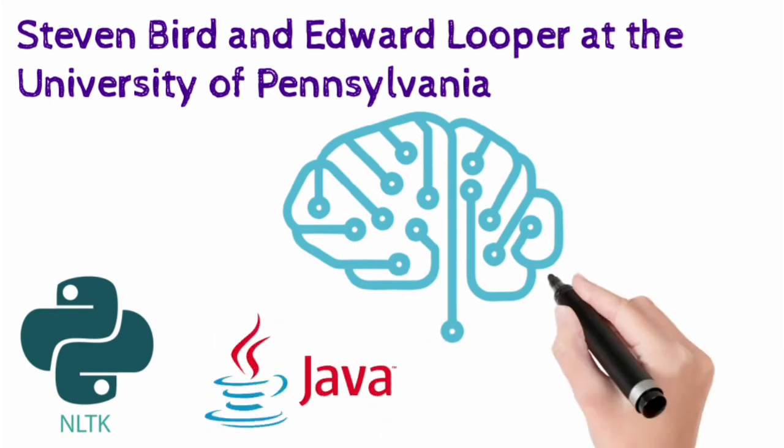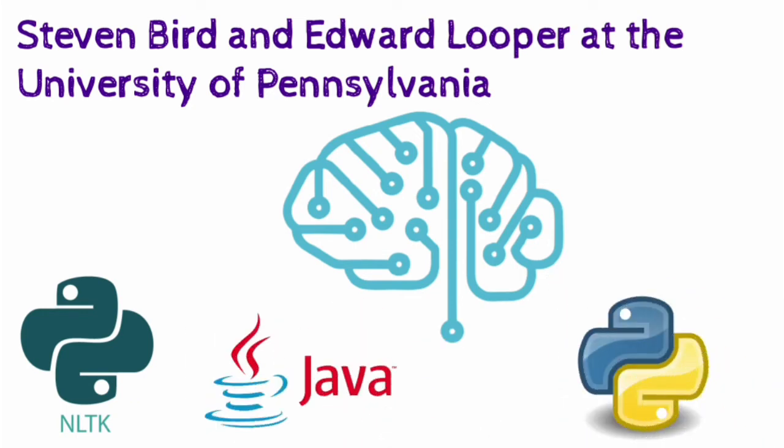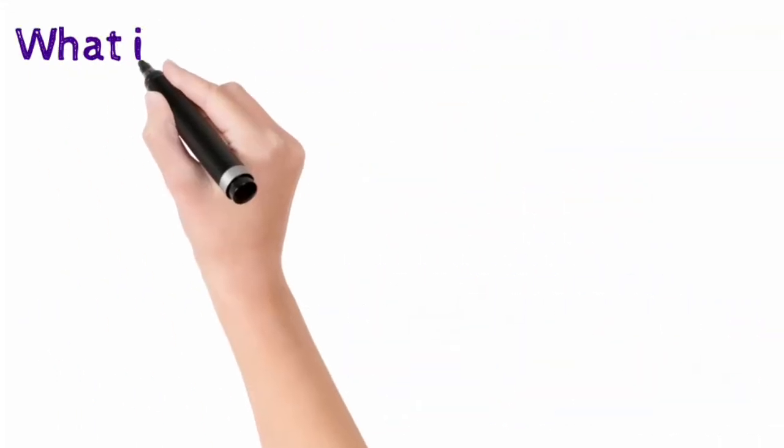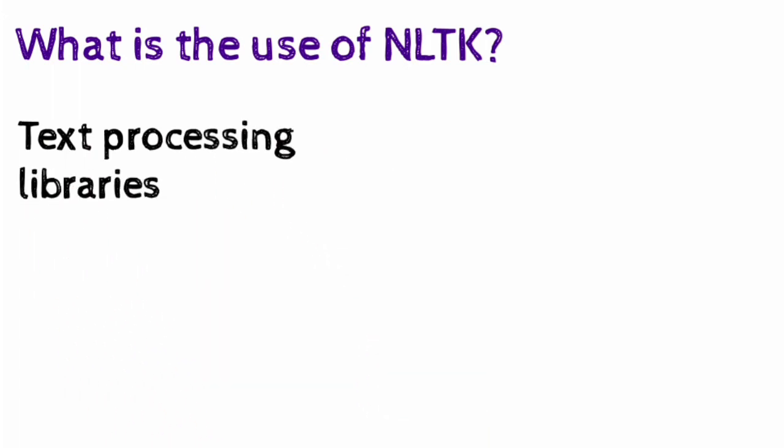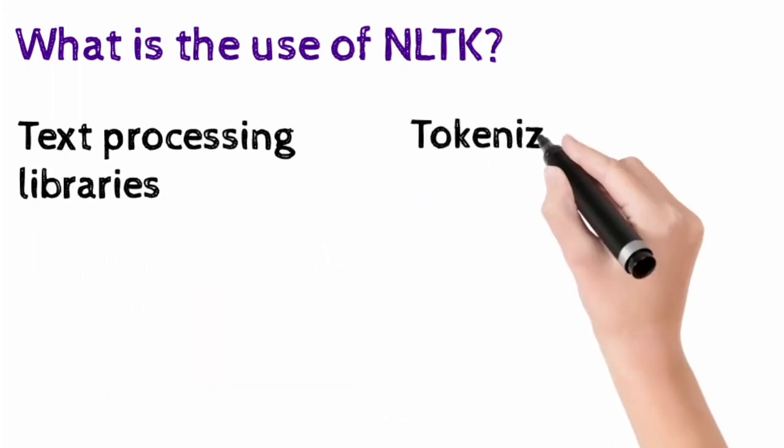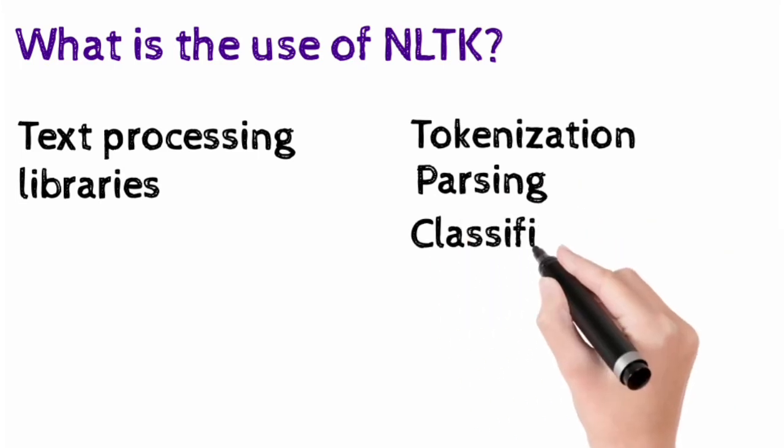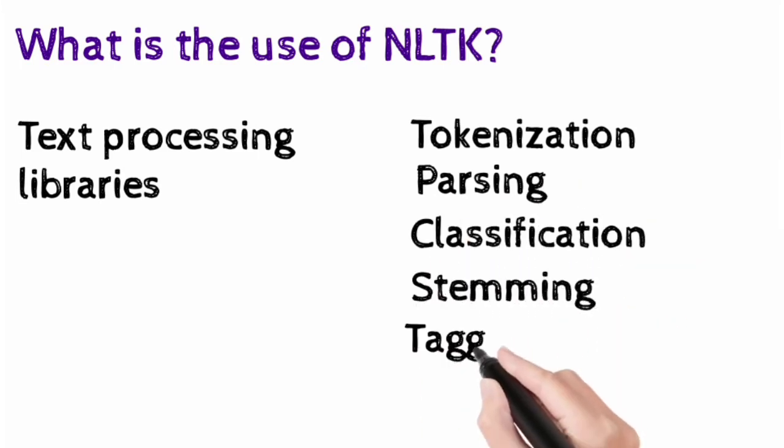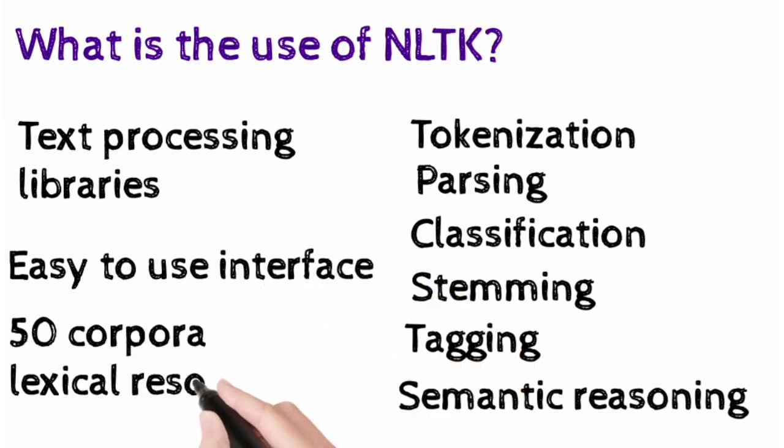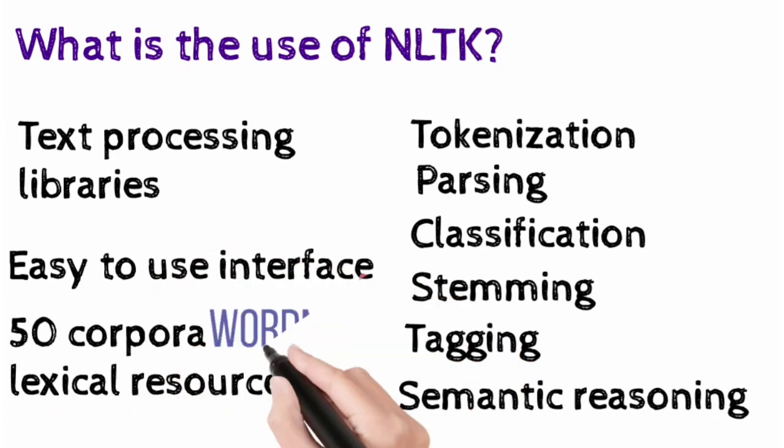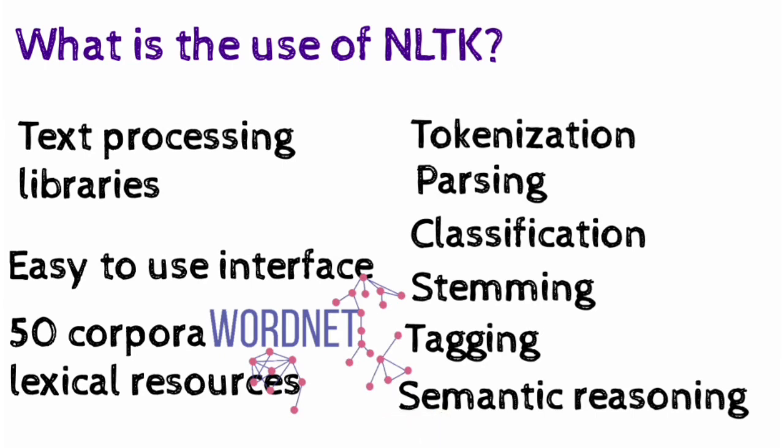Now that we have found out what this particular library is, let us understand what is the use of NLP. NLTK involves text processing libraries such as tokenization, parsing, classification, stemming, tagging, and semantic reasoning. It also provides easy interface to use over 50 corpora and lexical resources such as WordNet. Now one by one, let's understand the text processing libraries.